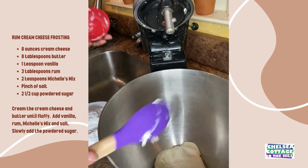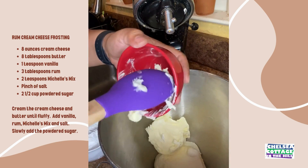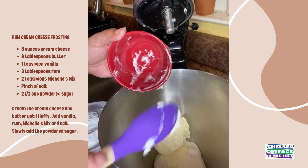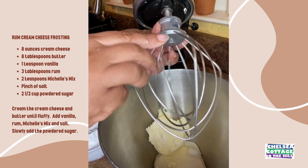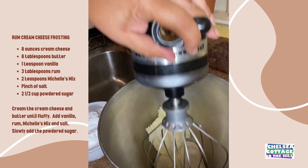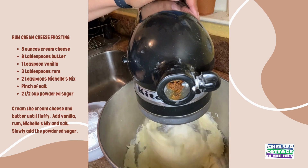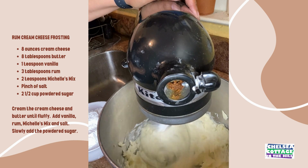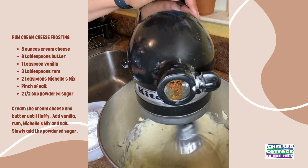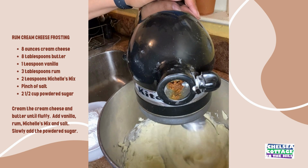Allow the simple syrup to be absorbed completely into the cake before frosting the layers. For the rum cream cheese frosting, use the whisk attachment on your mixer. First, add the cream cheese and butter and cream until smooth. Next, add the Michelle's Mix, vanilla, rum, and a pinch of salt. I'm using white rum in the frosting; however, you can use the rum of your choice, and if you want something a little looser, you can add a little bit more rum, but not too much or the consistency will be too thin.